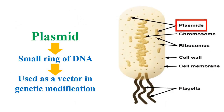On the other side, in the bacterial cell, plasmid is a small ring of DNA used as a vector in genetic modifications.